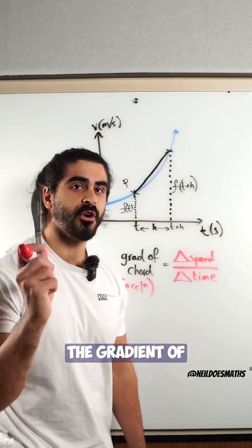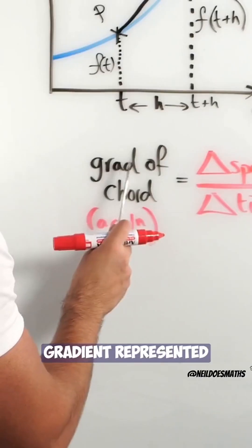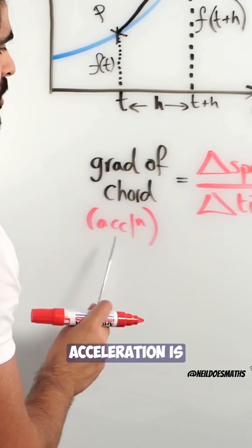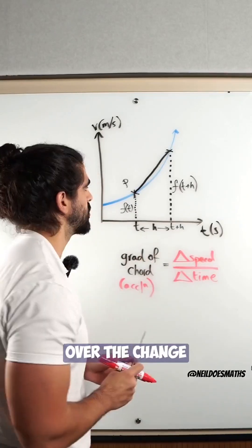Now let's find the gradient of our chord. Remember the gradient, represented by acceleration, is the change in speed over the change in time.